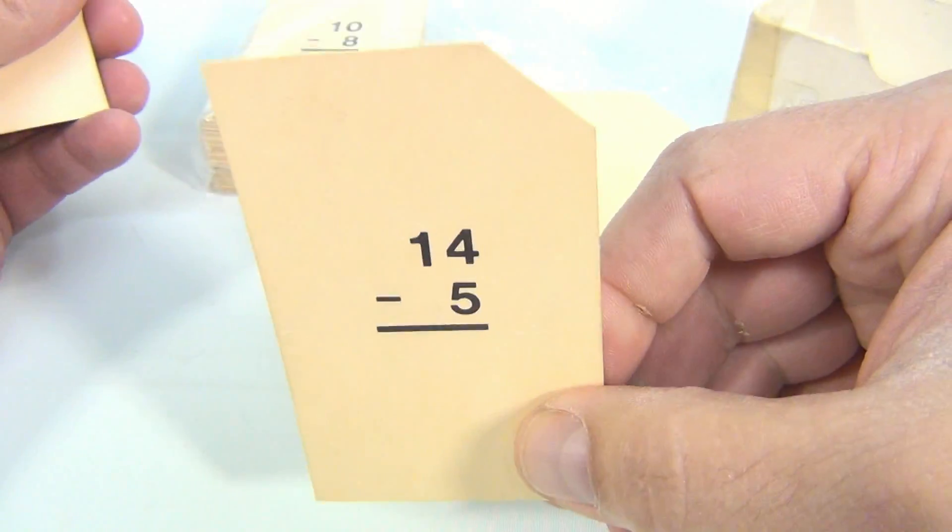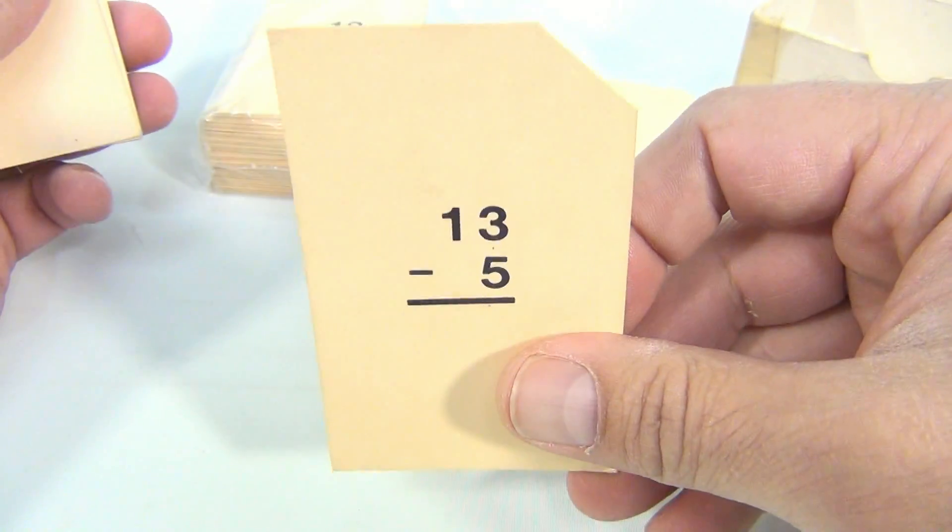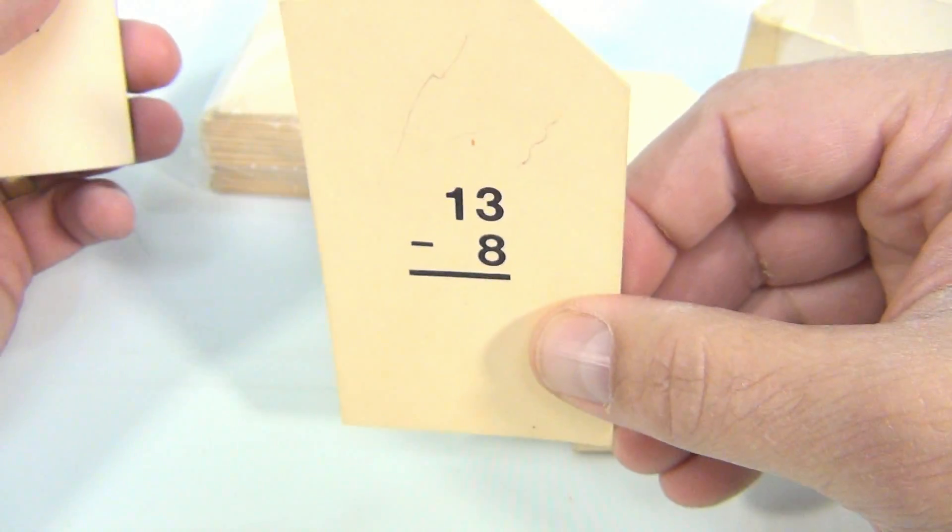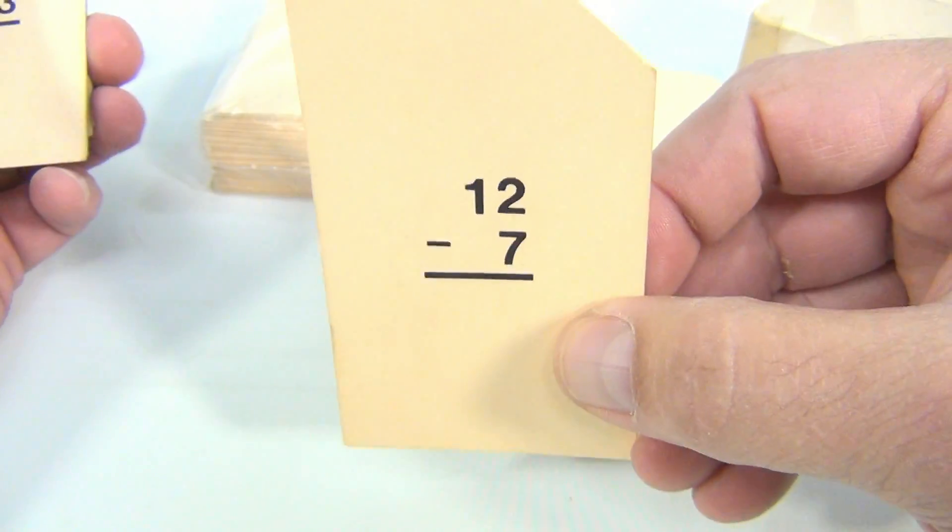Are you doing good? 13 minus 5, ooh tricky, 13 minus 8, ooh tricky, 12 minus 7, 11 minus 3.